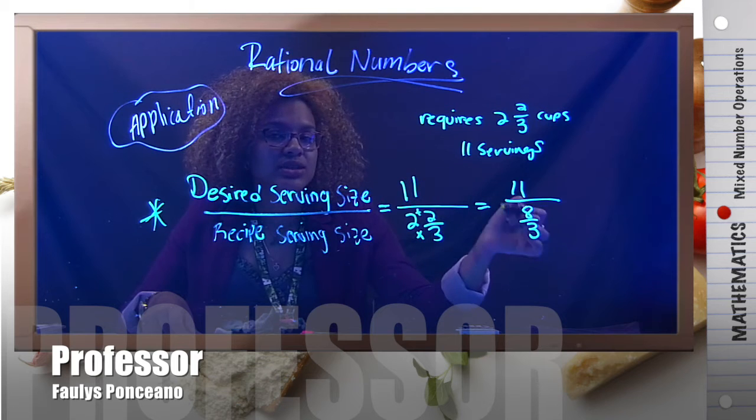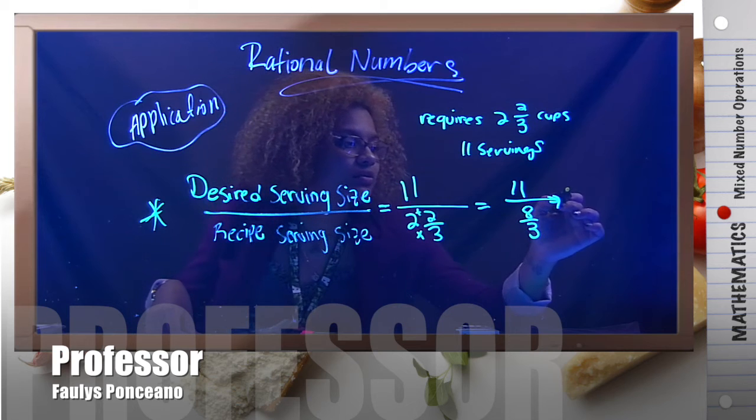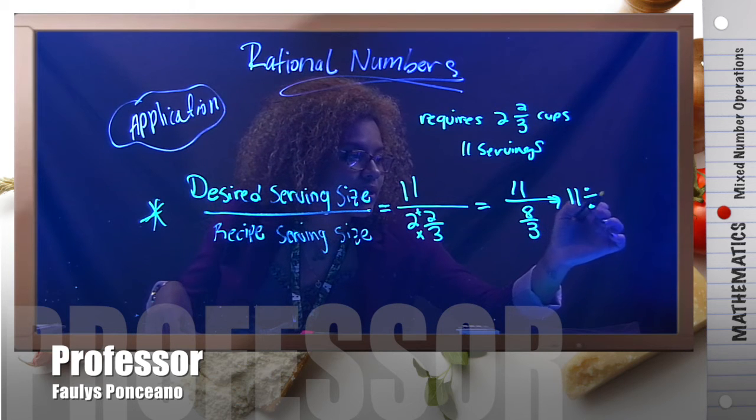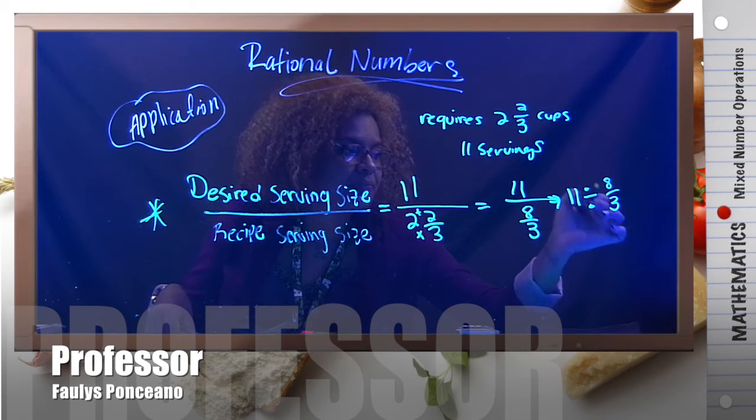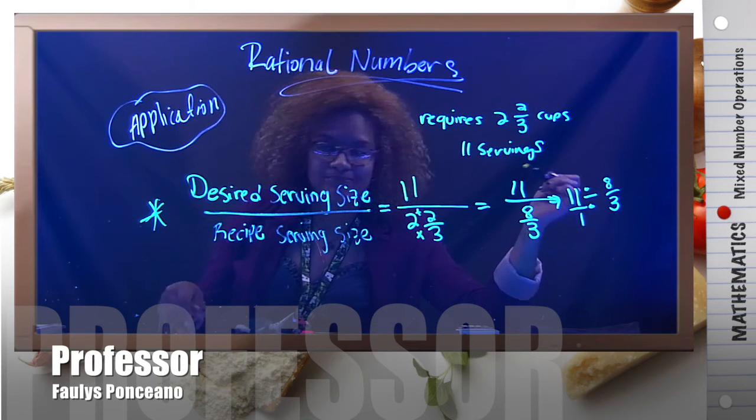Now what is this? A division. Let's rewrite it. I have 11 divided by eight over three. To make it easier, let's put this over one.